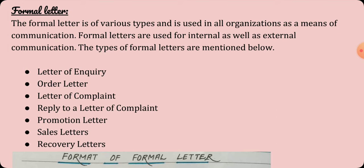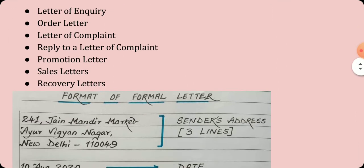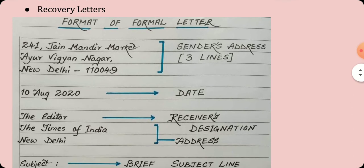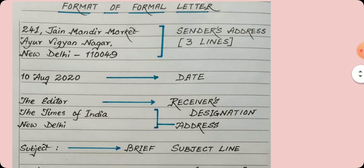Next, we come to the most important aspect of a formal letter — that is its format. The first thing is the sender's address. You must write the address in such a way so that it fits in three lines only — neither two lines nor four lines. It should be contained in three consecutive lines.